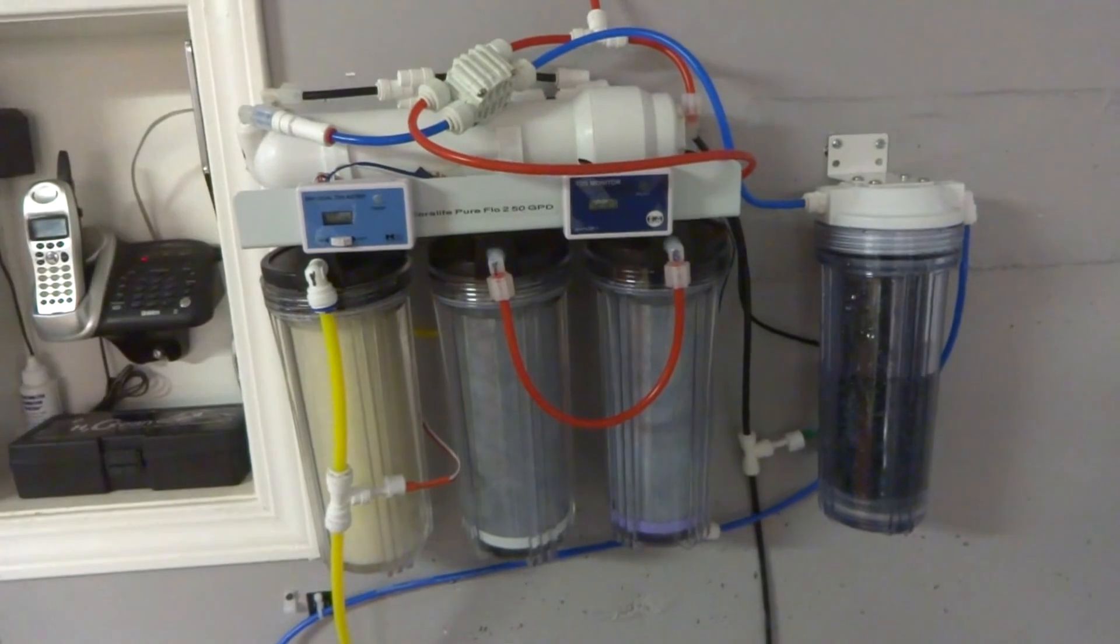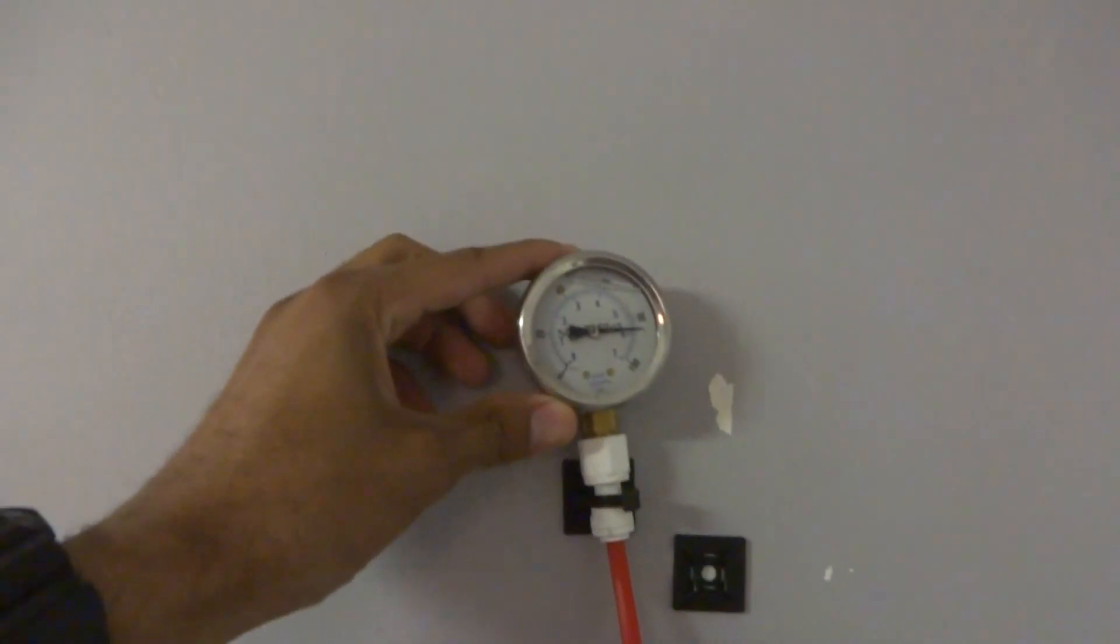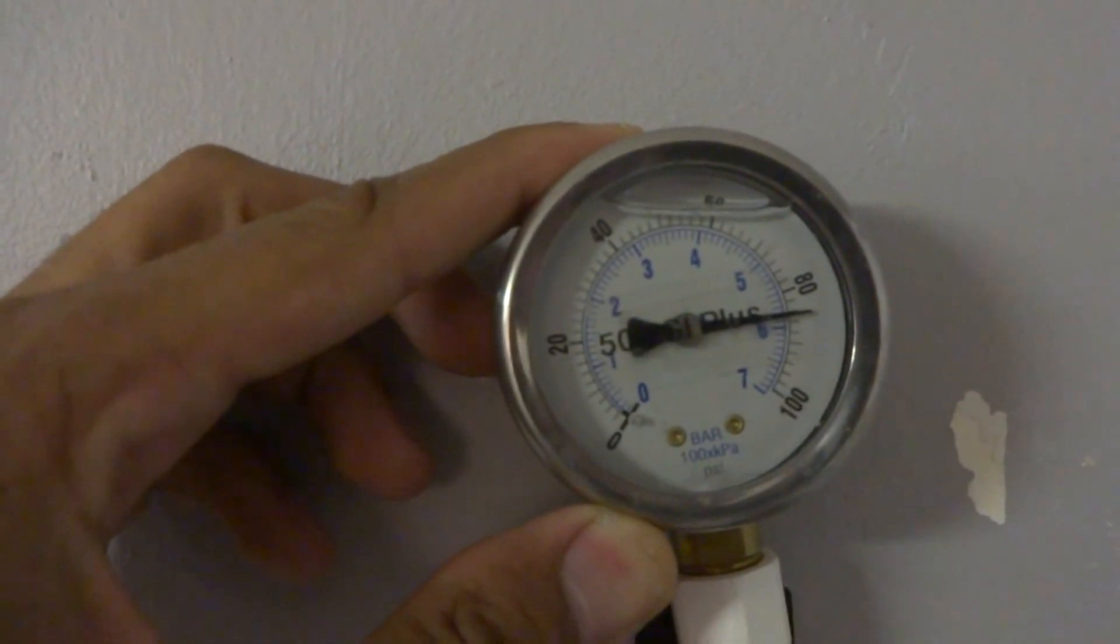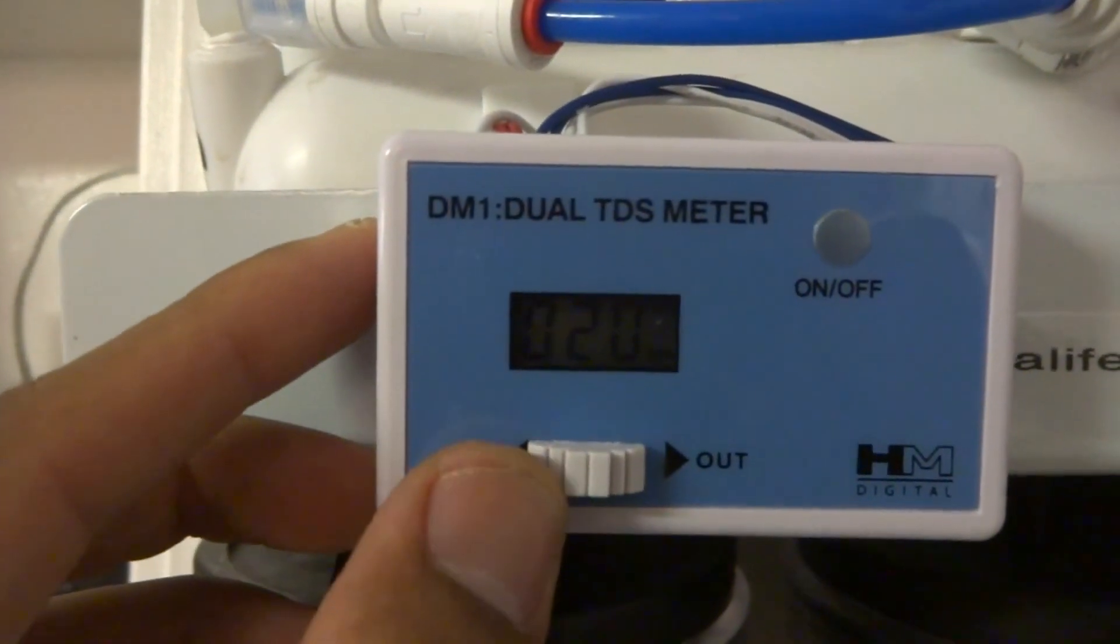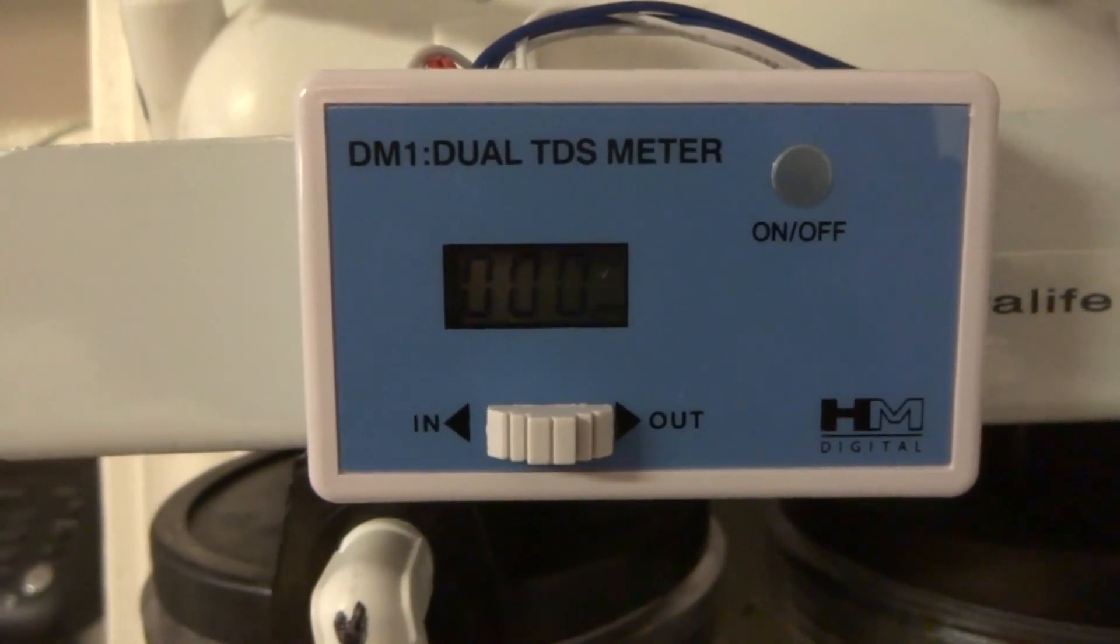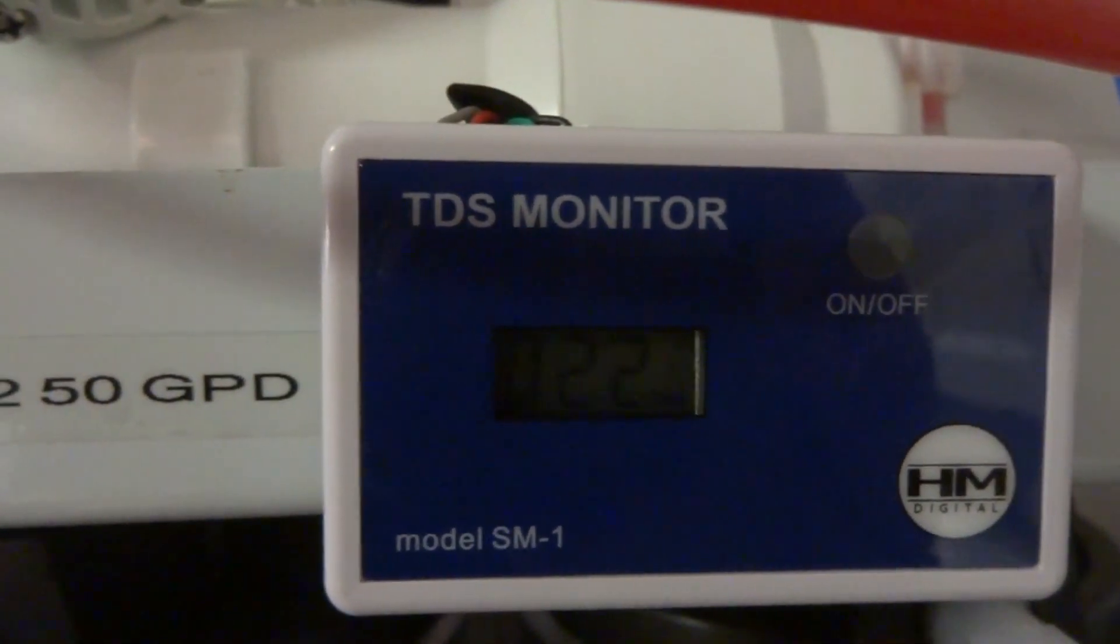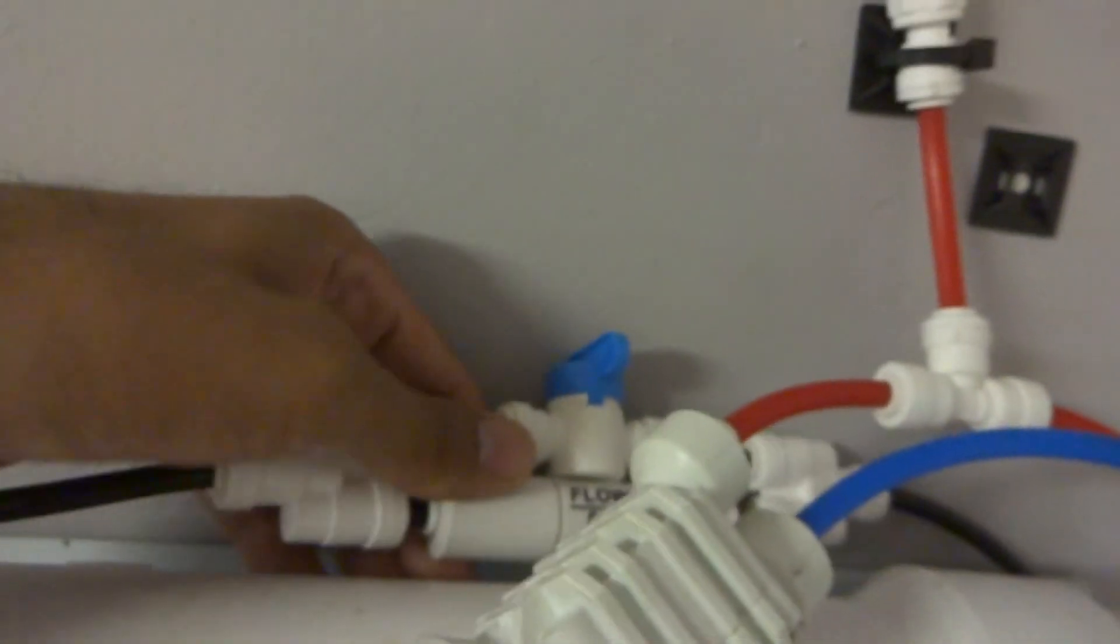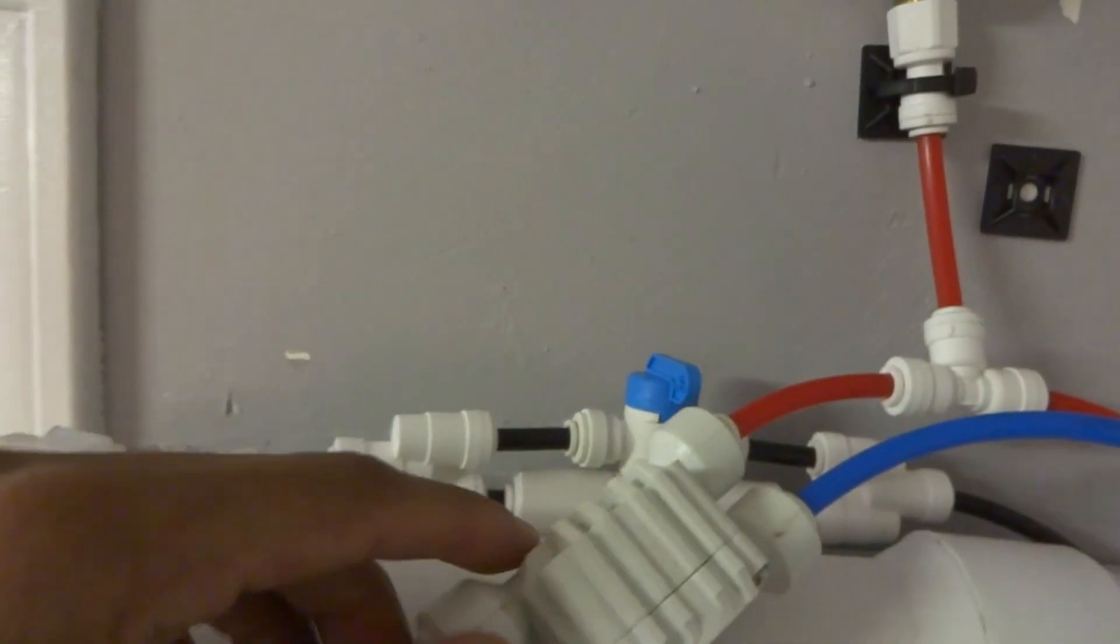Here's a closer look at the RODI unit. You can see the water pressure is about 84 pounds and then the TDS going in is about 20. That's from the tap. TDS going out to the product bin is 0. The TDS going out to the waistline is 22. Here's the flow restrictor and this is the flush kit that I installed as well.